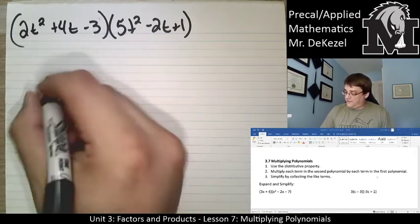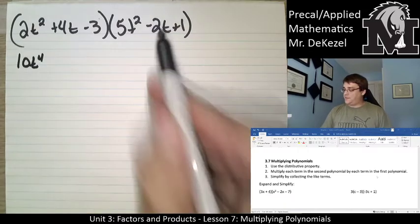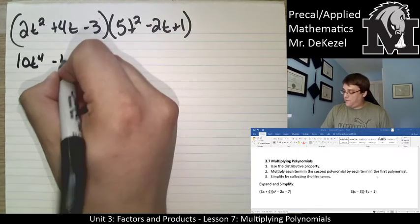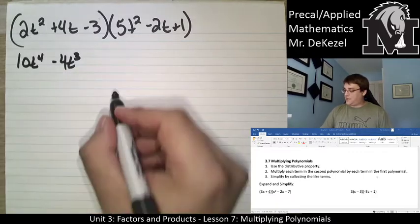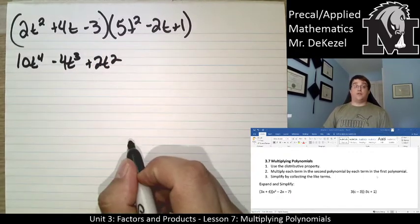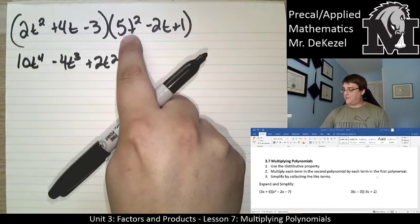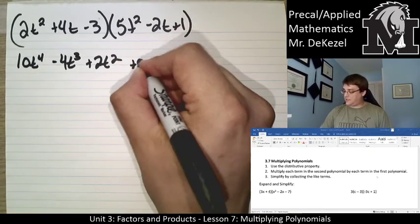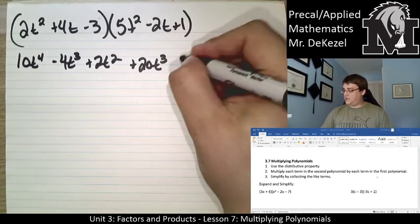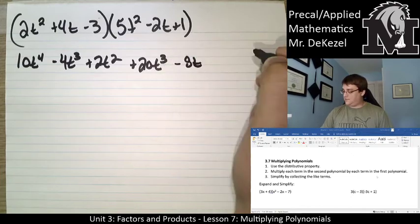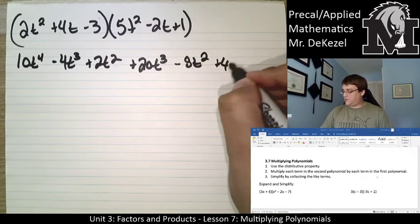2t squared times 5t squared, that's 10t to the power of 4. 2t squared times minus 2t is minus 4t to the power of 3. 2t squared times plus 1 is plus 2t squared. We've done that for the first term. Let's do the second term. 4t times 5t squared, that is plus 20t to the power of 3. 4t times minus 2t is minus 8t to the power of 2. 4t times 1 is plus 4t.